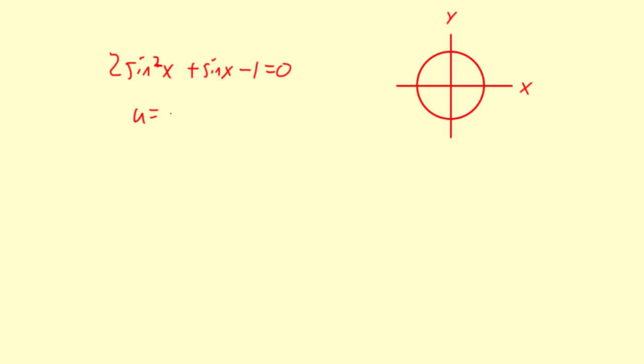I'm going to let u equal sine of x, just to make it a little easier to tell what's going on. So I'm going to have 2u squared plus u minus 1 equals 0.